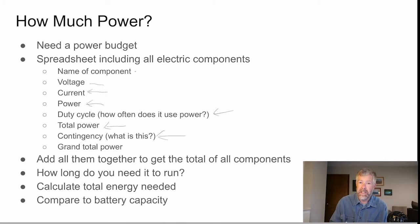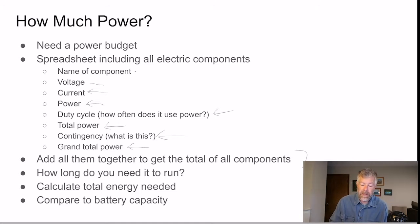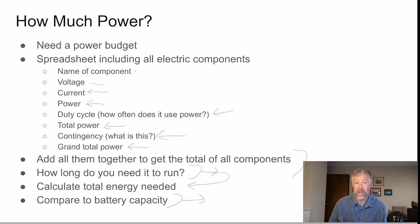We'll talk about contingency in a bit. You then make a grand total of the power by adding everything up. You need to size a battery from this, which means determining how long you're going to run these components — and that gives you an indication of how much total energy you actually need.